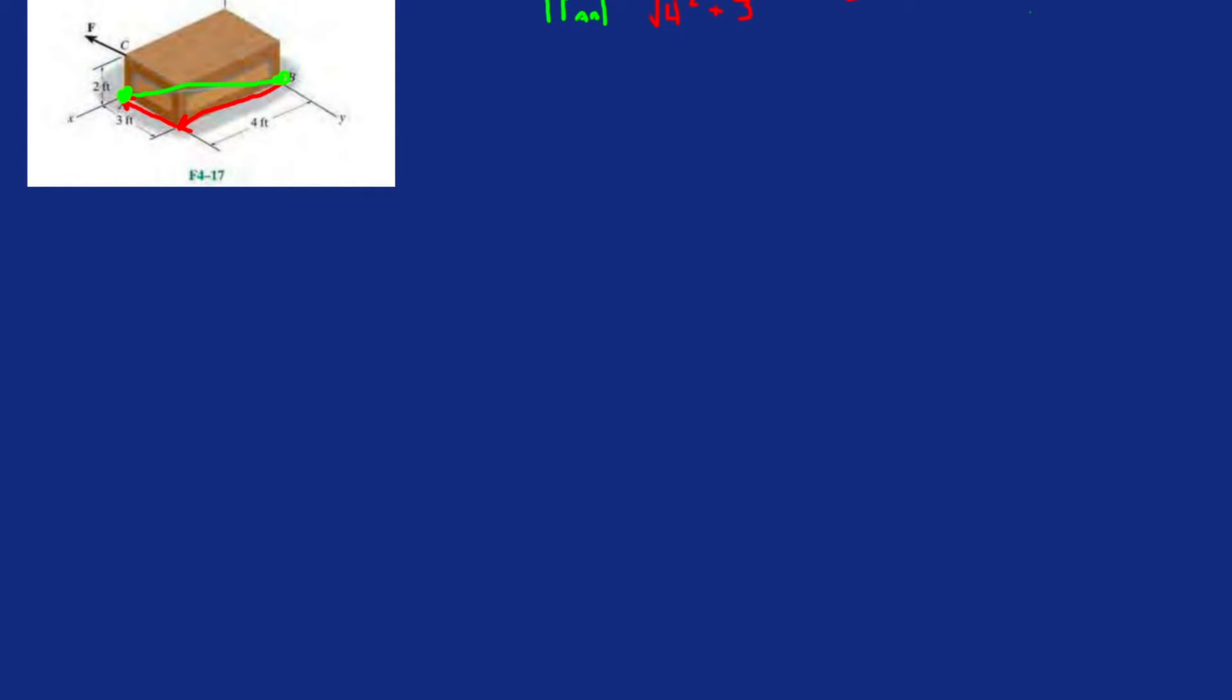Let's label the distance from A to C. What's the distance from A to C? The distance A to C is just going to be 0i, 0j, and then 2k. Now we're going to take the moment about point A.